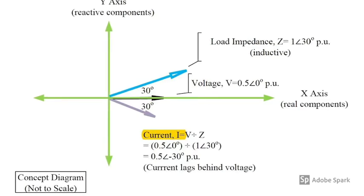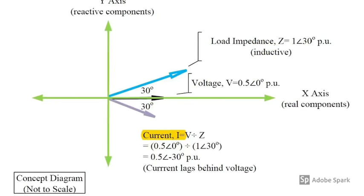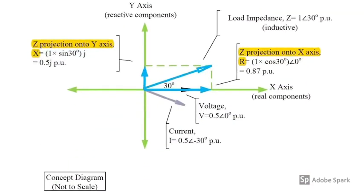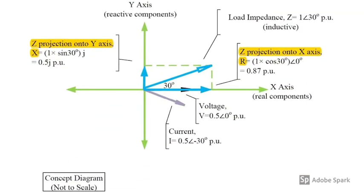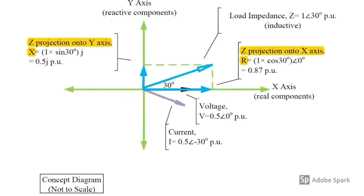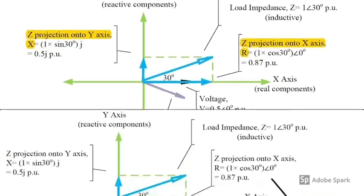So the current is 0.5 per unit magnitude at minus 30 degree angle. The impedance can be projected onto x-axis to get resistance value R, and can be projected onto y-axis to get reactance X.